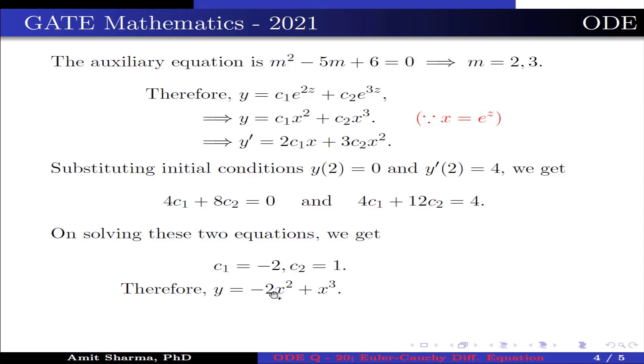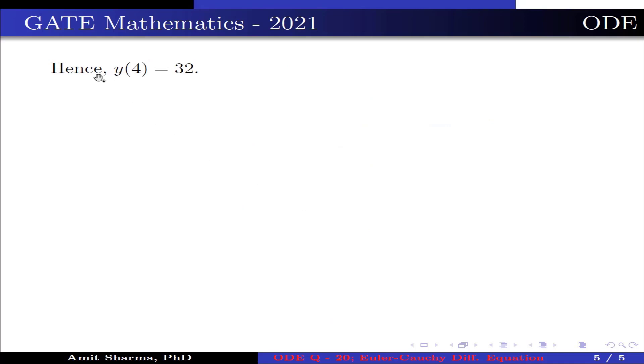Therefore, the value of y = -2x² + x³. Now, y(4) = -2(4²) + 4³, which is 32. Hence, the value of y(4) is 32.